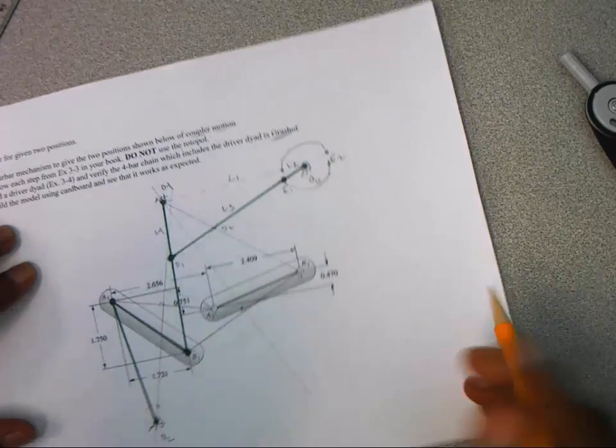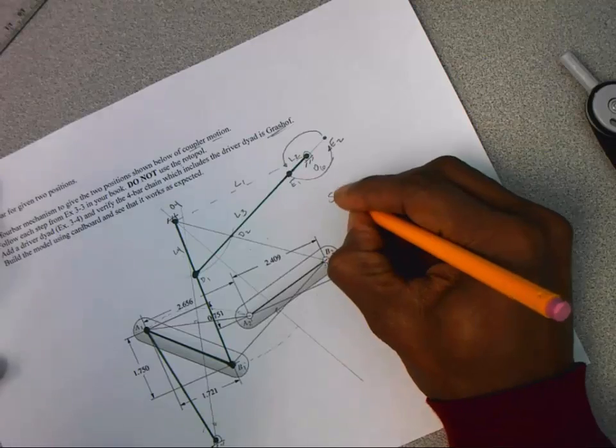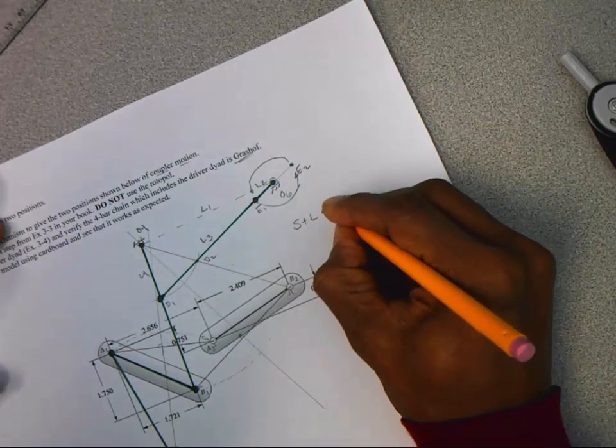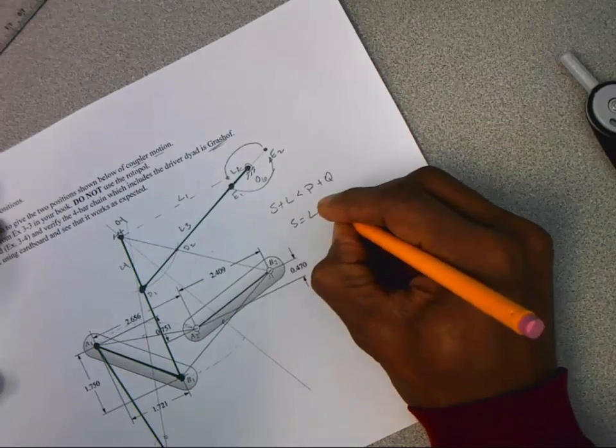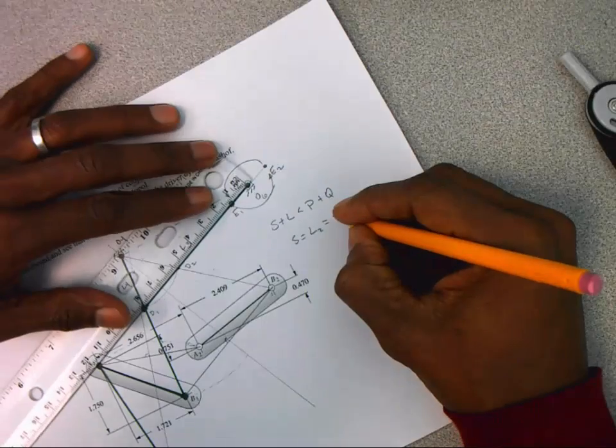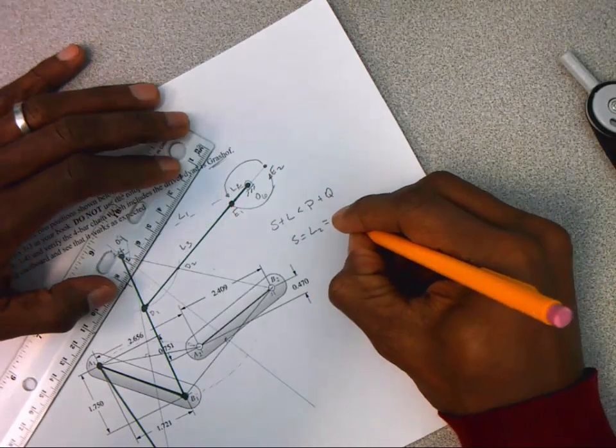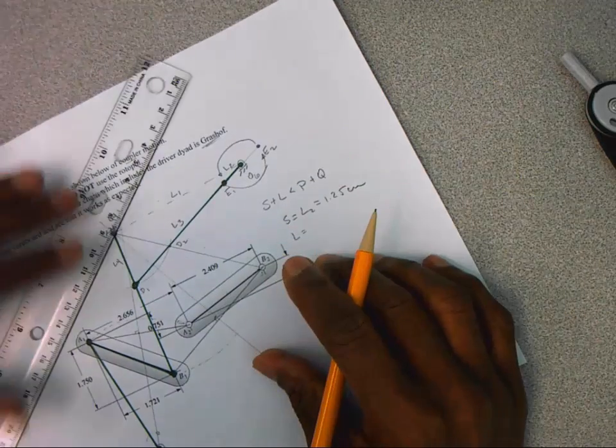Go ahead and give these the standard labels of L2, L3, L4, and L1. So it looks like my crank is indeed the shortest here. I'm looking for S plus L to be less than P plus Q. The S, the shortest, looks like it's going to be my crank. And I think we said that was 1.25 centimeters.